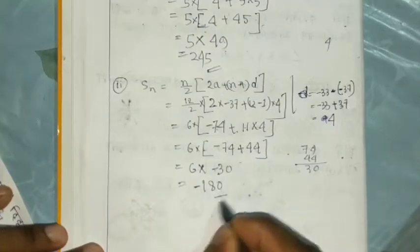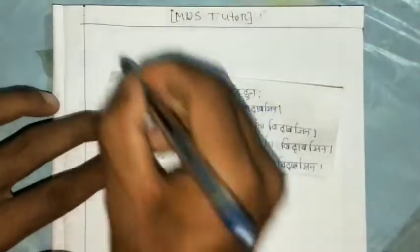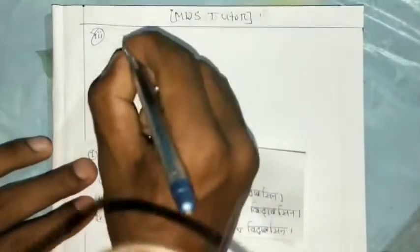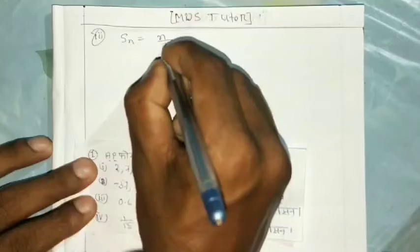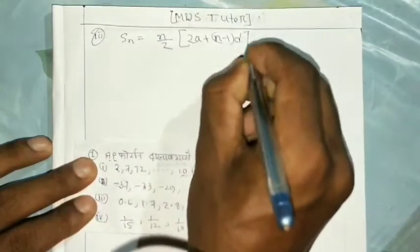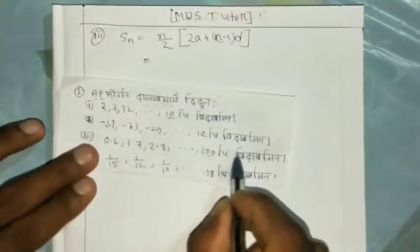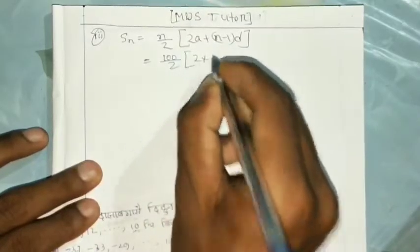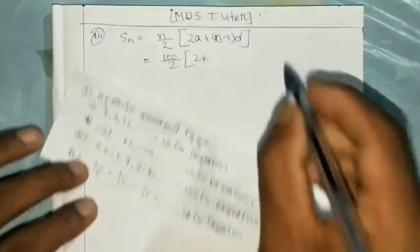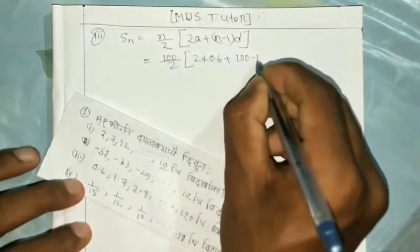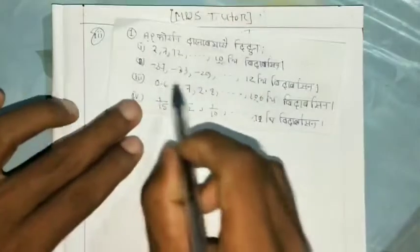Full-time by 180. Next question 3: S.N. is equal to n by 2, into 2a plus n minus 1 into d.